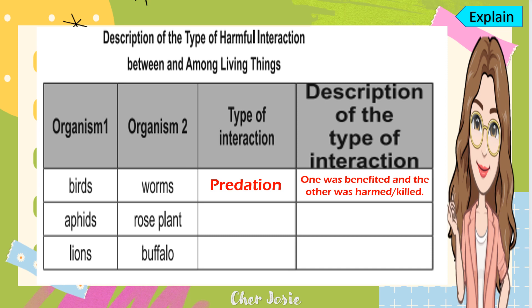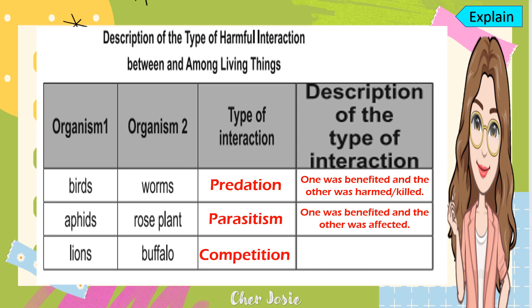The second one, aphids and rose plant: the type of interaction is parasitism. Aphids are the parasite and the rose plant is the host. One was benefited and the other was affected. The last one is lions and buffalo: they compete with each other, so the type of interaction for this is competition.